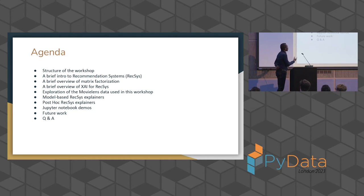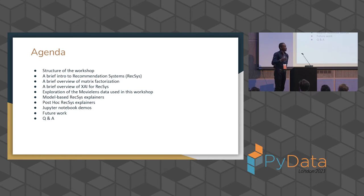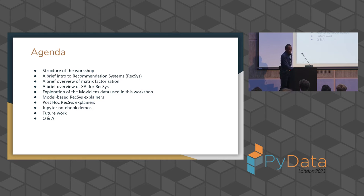The structure is as follows: I'll start with an overview of recommendation systems, then dive into collaborative filtering — primarily matrix factorization. We'll briefly talk about explainability in AI with a focus on recommendation systems, then do exploratory data analysis of the MovieLens datasets. I'll walk through a number of explainable recommendation models, followed by about six or seven demos, and finally a Q&A session.